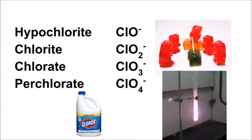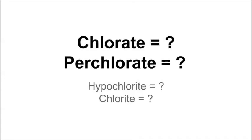And for chlorine — hypochlorite, chlorite too. Chlorate and perchlorate, O minus 1. All with 1 chlorine, but the oxygen, it goes from 1 to 4.